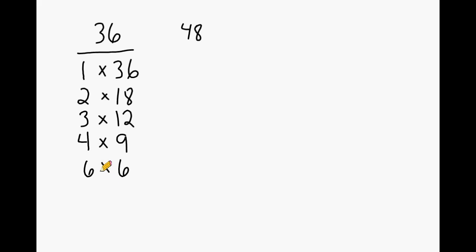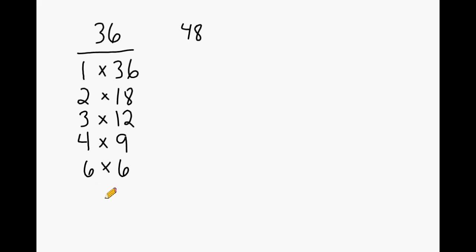When you are creating a factor list systematically and you come across a factor pair that is a number times itself — like 6 times 6 — that means you have found every single factor that fits inside that number. That's a signal that you should stop at that point.